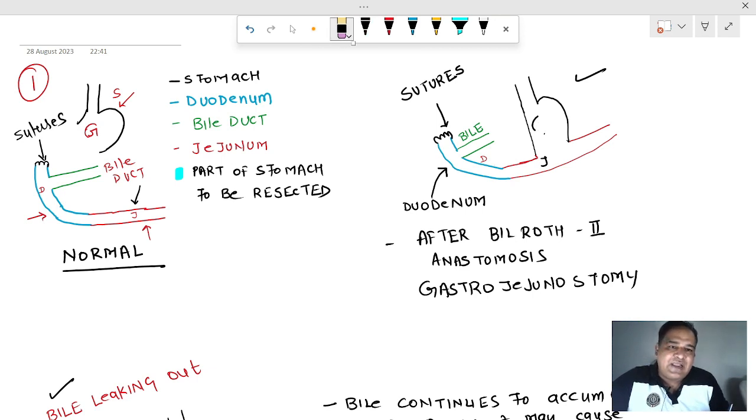How will the physiology work now? Your patient will eat some food, the food will enter the stomach, and then it will enter the jejunum directly. The bile will enter the duodenum from the bile duct, and it will mix up with the food over here. If the bile goes forward, that means towards the jejunum, everything is normal.